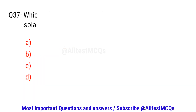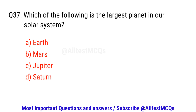Question number thirty-seven. Which of the following is the largest planet in our solar system? The right option is C. Jupiter.